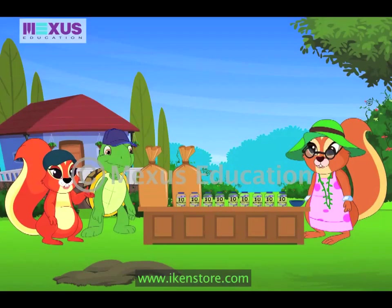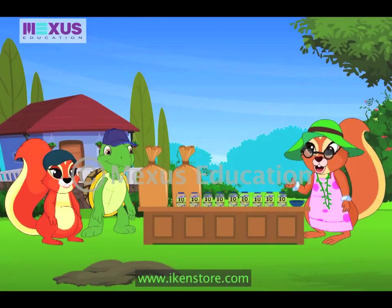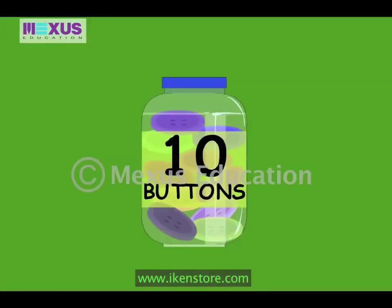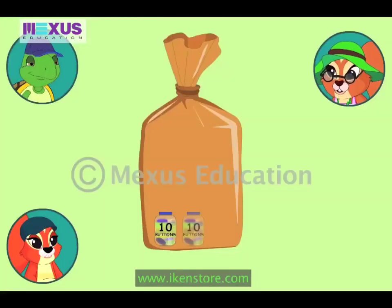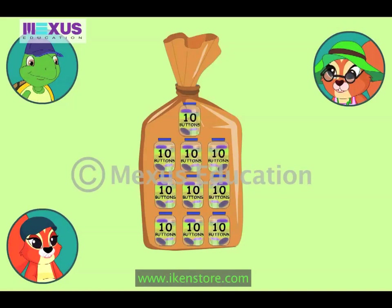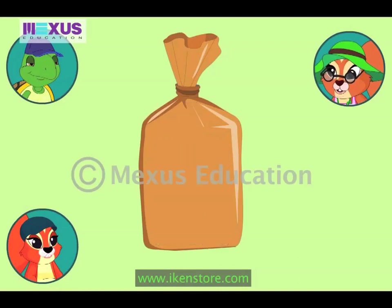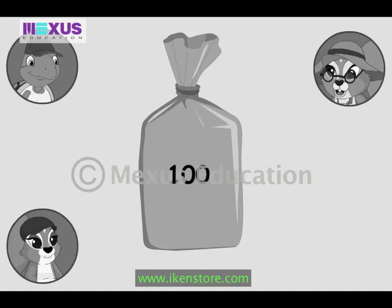Mom, so what's there in the jute sacks? Can you see the small jars? Each jar is filled with ten buttons. The jute sacks contain ten such jars each. So, the place value of a sack is ten times that of a jar, which is hundred. Come on now, find the total number of buttons in all.